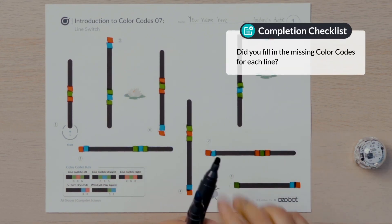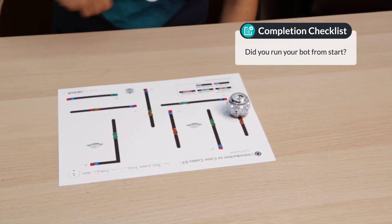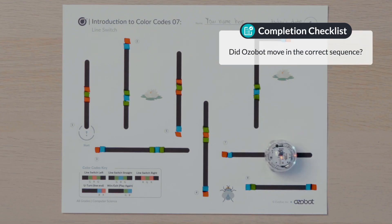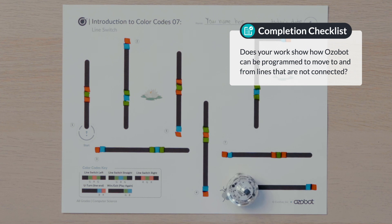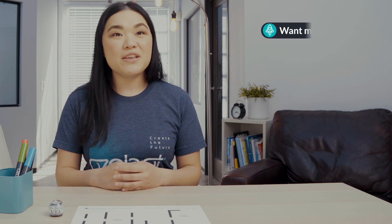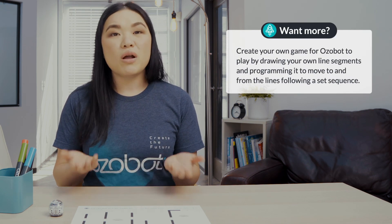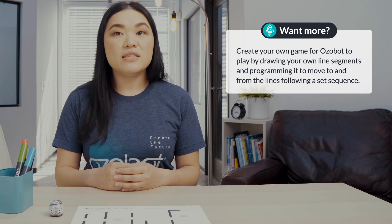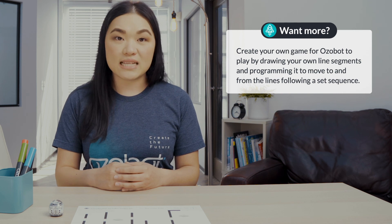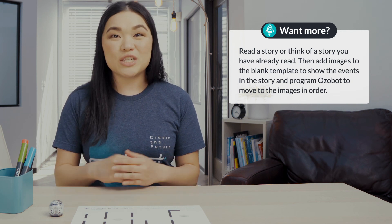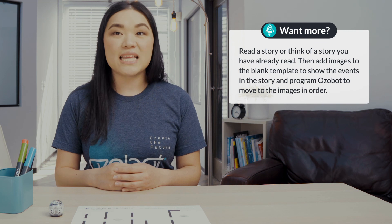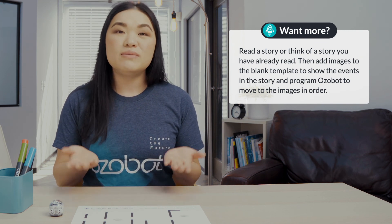Did you fill in the missing color codes for each line? Did you run your bot from start? Did Ozobot move in the correct sequence? Does your work show how Ozobot can be programmed to move to and from lines that are not connected? If you're looking for more to do, you can create your own game for Ozobot to play by drawing your own line segments and programming the bot to move to and from the lines following a set sequence. Or you can read a story or think of a story you've already read, then add images to the blank template to show the events in the story and program Ozobot to move to the images in order. Come back again soon for our next lesson.